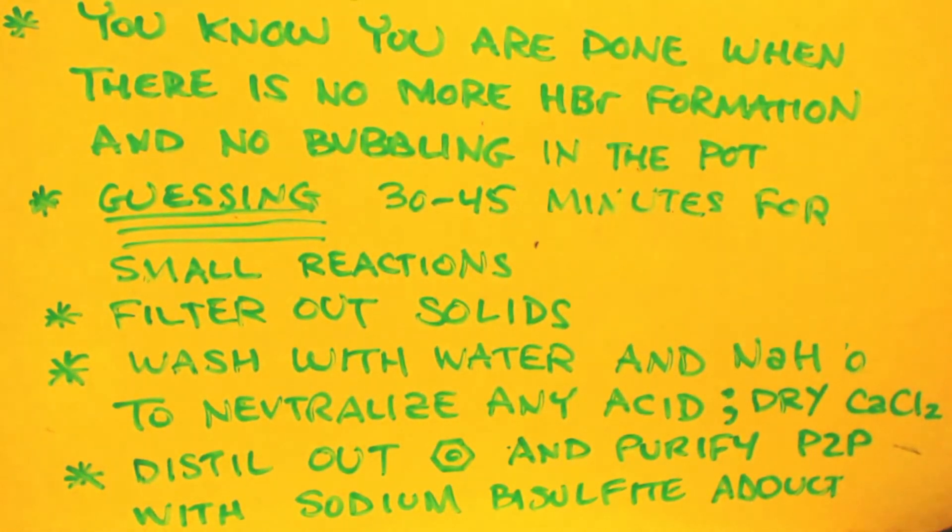And then once the carbocation reacts with the benzene, it gets regenerated. That takes time. If you only have 10 molecules of iron tribromide in there, those 10 molecules can only react with 10 things, and then they have to wait until it goes through the reaction completely before it's regenerated. So you don't want to put a whole bunch in, that's for sure.